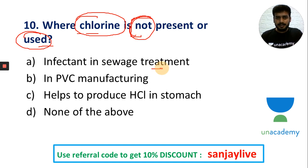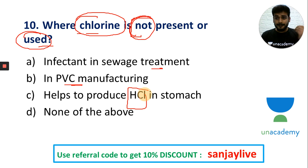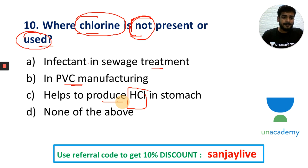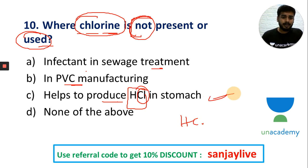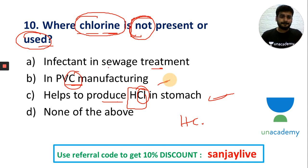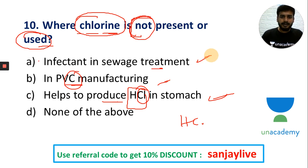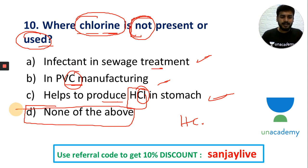Where chlorine is not present or used — this is the question. Chlorine is used in water treatment to kill pathogens. It is used in PVC (polyvinyl chloride) manufacture. It is used in HCl (hydrochloric acid) production. Option D — table salt — is the correct answer; chlorine is not used there in its elemental form.